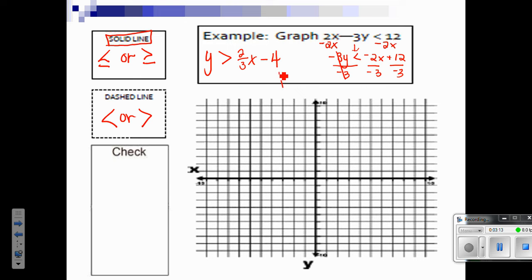I use my y-intercept, which is negative 4. So I go down to negative 4 and make a point. Then I go up 2 over 3, make another point. I can go up 2 and over 3 and make another point.